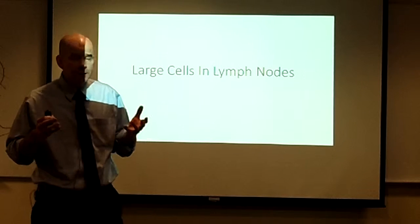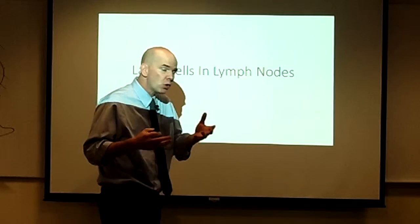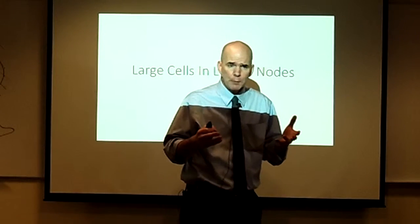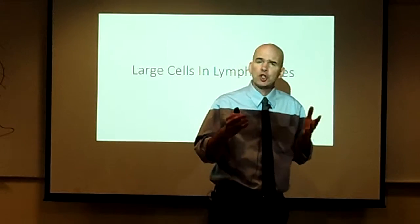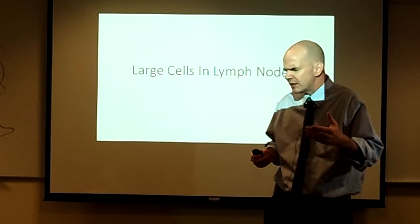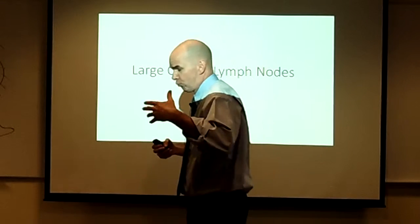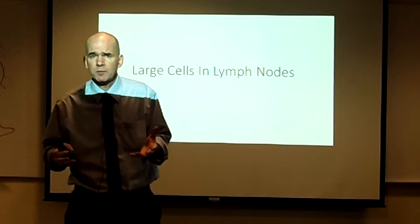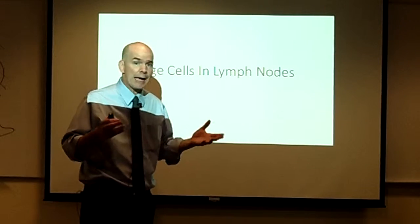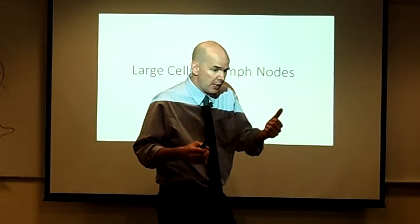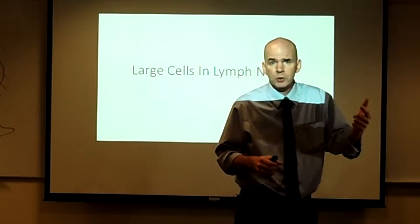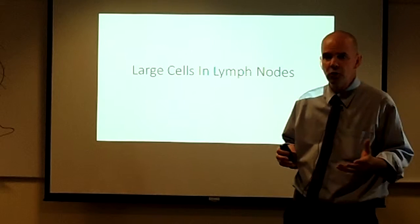There are a number of conditions in which we see normal lymph node architecture in great part effaced by sheets of large cells. These conditions can range from reactive conditions like infectious mononucleosis to high-grade lymphomas like anaplastic large cell lymphoma and diffuse large B cell lymphoma.